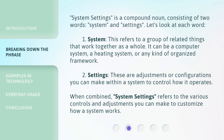Second, settings. These are adjustments or configurations you can make within a system to control how it operates. When combined, system settings refers to the various controls and adjustments you can make to customize how a system works.